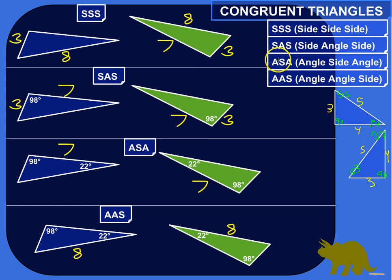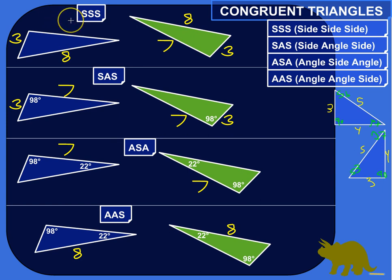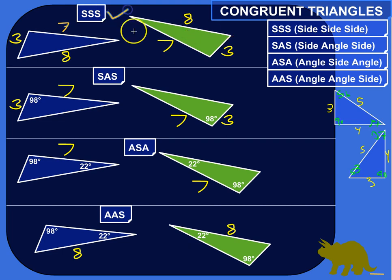We've got Side-Side-Side (SSS), Side-Angle-Side (SAS), Angle-Side-Angle (ASA), and Angle-Angle-Side (AAS). I think it's easier just to say the whole name personally. The first test is Side-Side-Side. If I give you just the three sides of two triangles and the three corresponding sides are congruent with each other, that's enough to tell me that these two triangles are congruent. So I've got three, three, eight, eight, seven, seven — these two triangles are congruent. By the logic of geometry, their corresponding angles have to be congruent as well, but all we need to know is that the three corresponding sides are congruent.